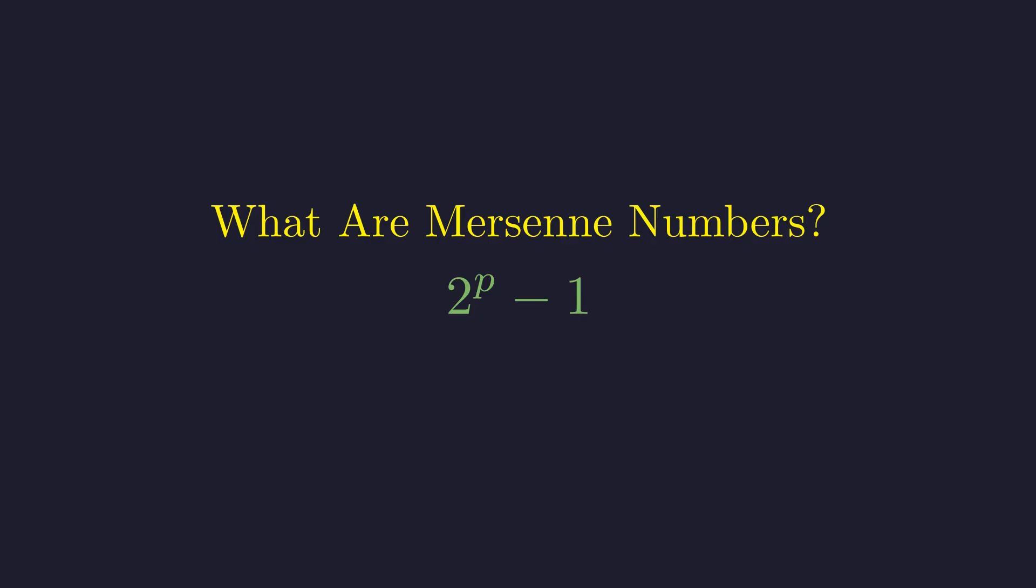We write m of p when n equals p and p is prime. A Mersenne prime is an m of p that is itself prime.